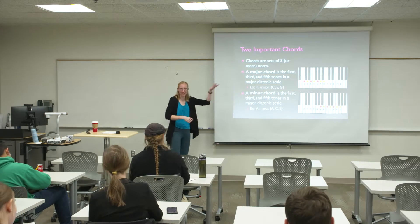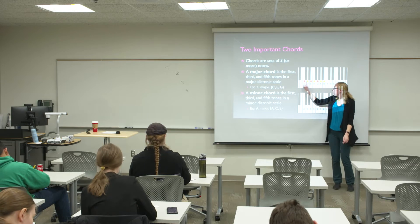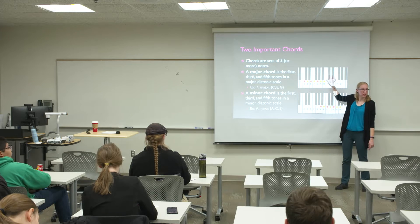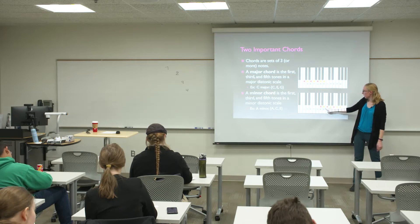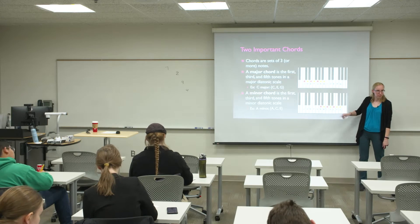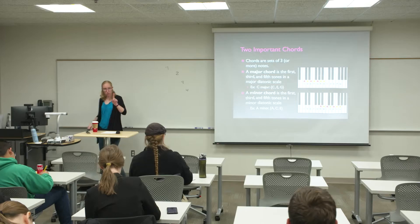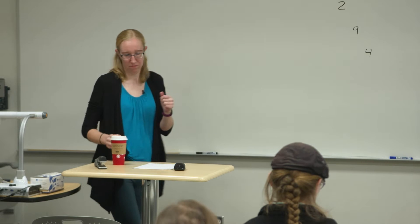Chords are sets of three or more notes — for us right now, just three. A major chord: take a major scale, here's C major, and take the first, third, and fifth notes. I can do other major chords by sliding those red dots up the same amount. A minor chord: take a minor scale — here is the A minor scale — and take the first, third, and fifth notes of that scale. So we have notes, scales, intervals, and chords. That's music theory.